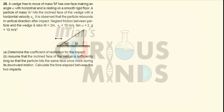A wedge free to move of mass M has one face making an angle alpha with the horizontal and is resting on a smooth rigid floor. A particle of mass small m hits the inclined face of the wedge with a horizontal velocity V0. It is observed that the particle rebounds in a vertical direction after the impact. Neglect friction; take M = 2m, V0 = 10 m/s, tan(α) = 2, and g = 10 m/s². We must determine the coefficient of restitution for the impact, and calculate the time elapsed between two impacts if the particle hits the same face once more during its downward motion.